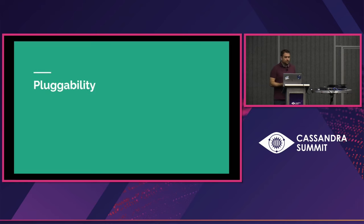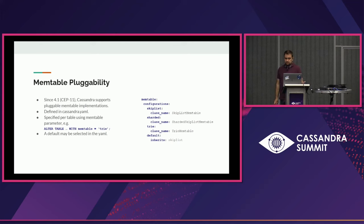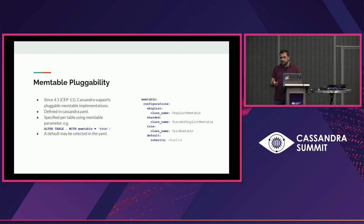To improve memtables in Cassandra, the best approach is to try different implementations, compare them against each other, and support some kind of pluggability of implementations. Since Cassandra 4.1, we've been able to support pluggable memtable implementations. There's an interface that the memtable implementation needs to support, and once you implement it, you can define memtable configurations in cassandra.yaml — for example, skip list, sharded, and trie configurations. You can choose a default for the whole database, or pick a specific implementation for individual tables.